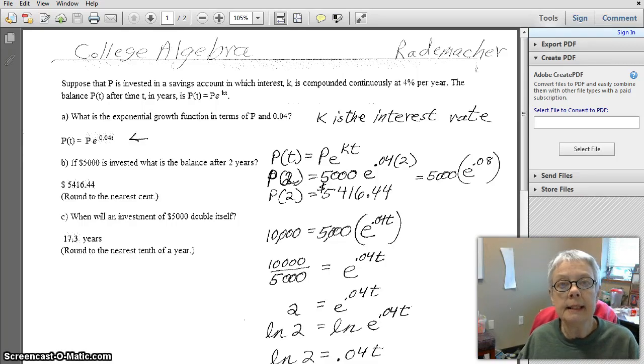Now, C is more interesting. C says, when will an investment of 5,000 double itself? That is, when—the word when means you're looking for T—when will $5,000 become $10,000 at this interest rate .04? We're going to find out.